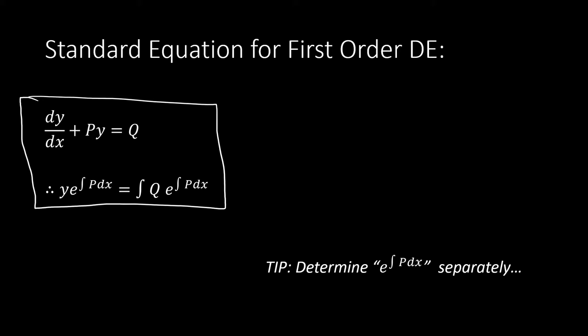With this equation, your equation has to be exactly in this order: you have to have dy/dx multiplied by one — not any other number — and you have to have positive p multiplying y equals to anything else without y, which is q. Your solution is y times e to the integral of p dx equals to the integral of q times e to the integral of p dx. The p and the e-integral terms here are exactly the same.